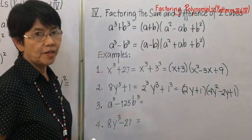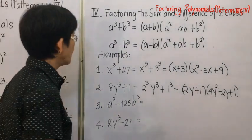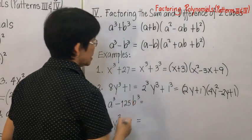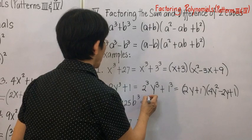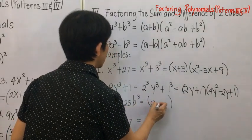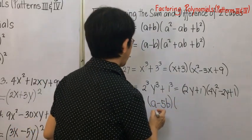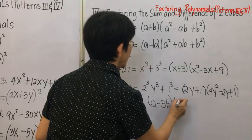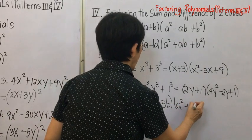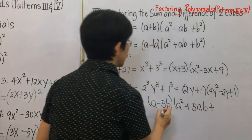Number three: a cubed minus 125. Since 125 is 5 cubed, get the cube root directly to give a minus 5 as the first factor. Then square a, take the positive product of a and 5 to get plus 5a for the middle term, and square the last term to get 25. Answer: a minus 5, times a squared plus 5a plus 25.